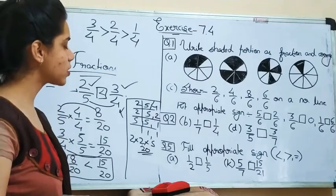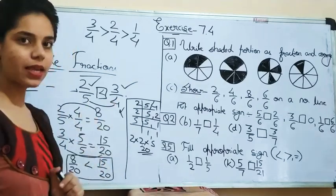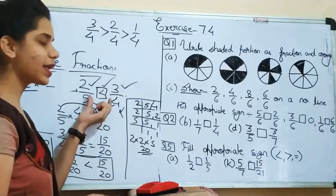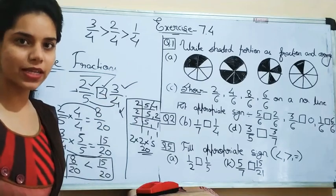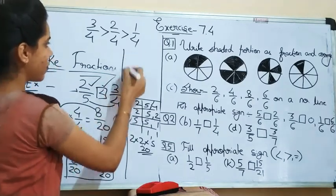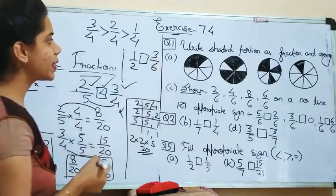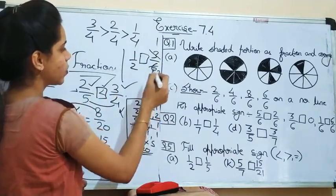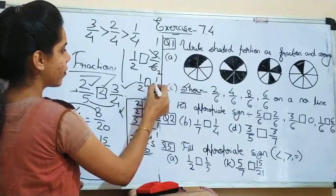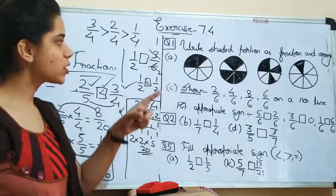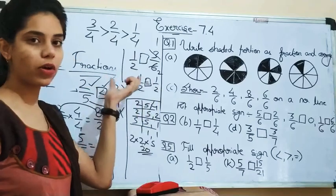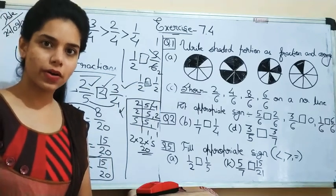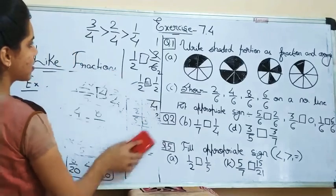I hope you understood this concept. On the basis of all these things we will start exercise 7.4. I have explained how to compare fractions — which is greater or smaller. There can be equal fractions also. For example, 1 by 2 and 3 by 6 — there is no need to find the LCM or equivalent fraction. First cancel them: 3 by 3 equals 1 by 2 and 6 divided by 3 equals 2, so you can directly put equals. First see the fraction, are they cancellable — if they cancel out, directly put the appropriate sign.